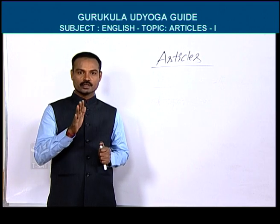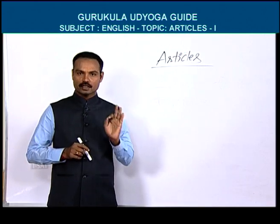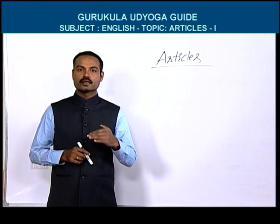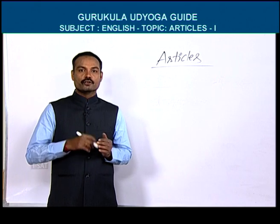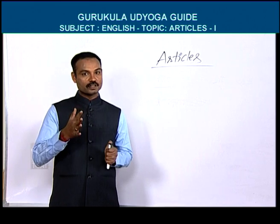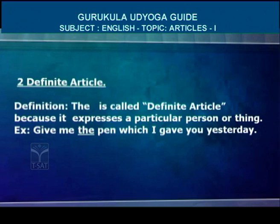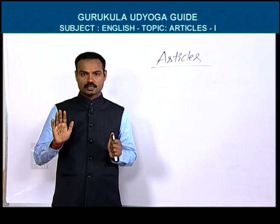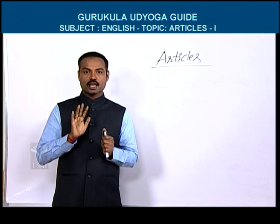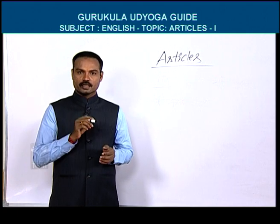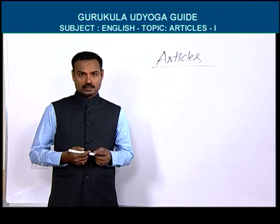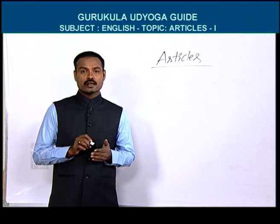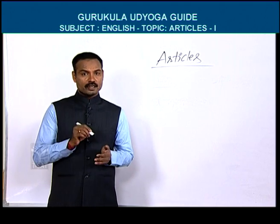Once again, the definition of indefinite article: A or an is called indefinite article because when we use either a or an in any sentence, that sentence cannot give us a definite meaning. The is called definite article because when we use the in any sentence, that sentence can give us a definite meaning — a particular meaning.